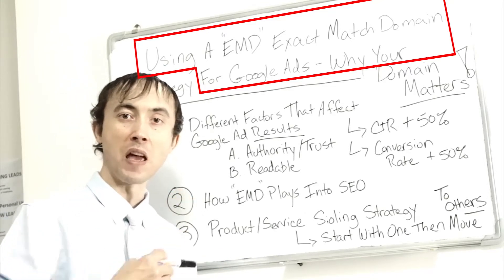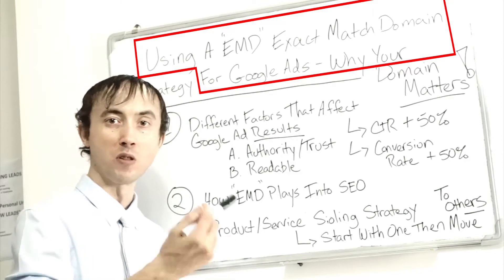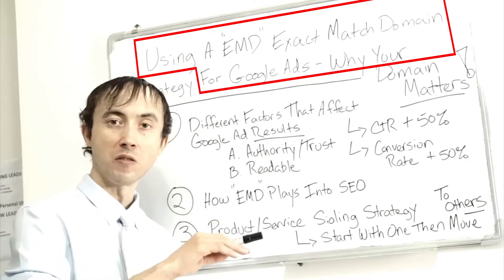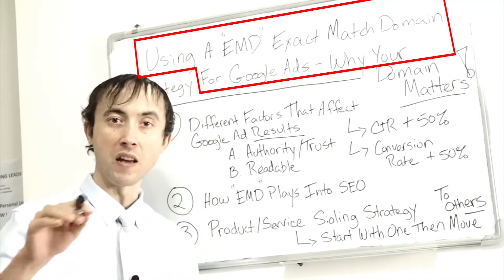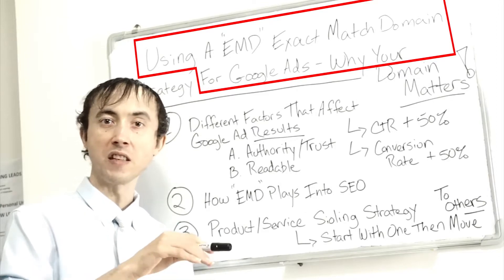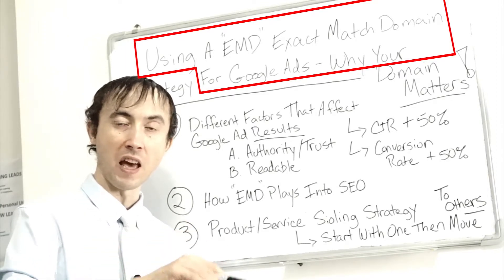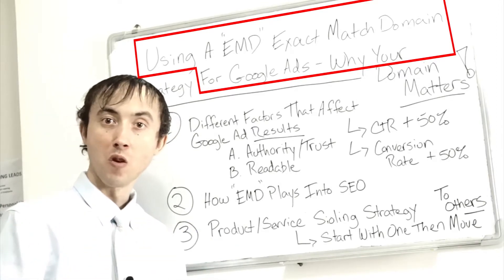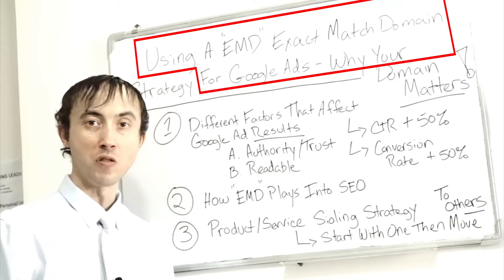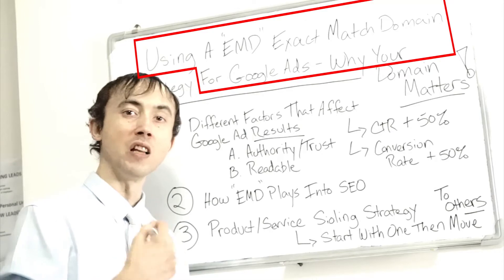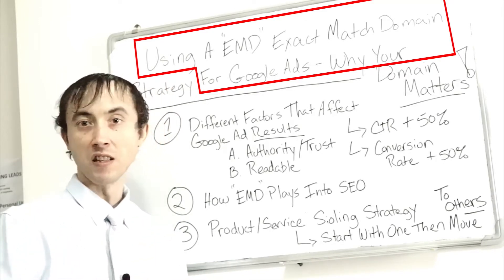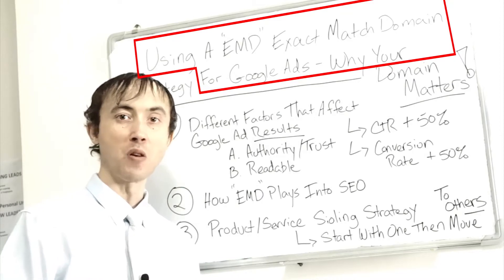For instance, if you have a paint product that can be used for a car and a boat, having the type of paint for auto paint or car paint — basically having two domains dedicated to each thing, even though the website itself is pretty much a mirror copy with some slight revisions — can actually help you a lot in both PPC and SEO.